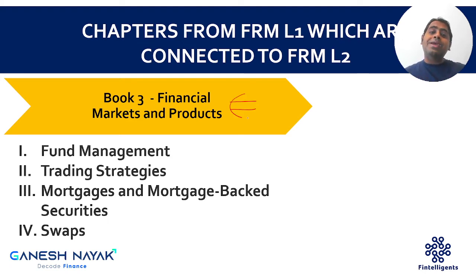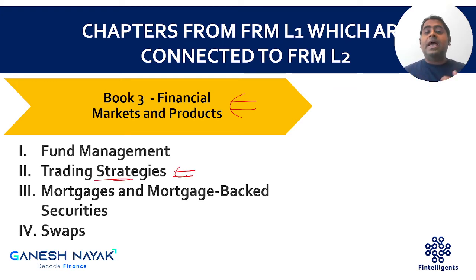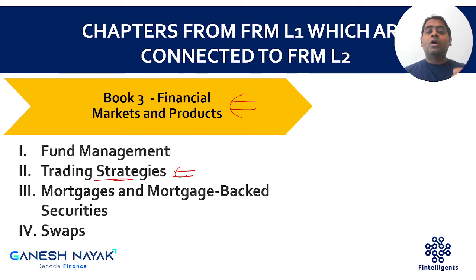Book 3 is Financial Markets and Products. In Level 2, they are not directly testing basics of products — they won't ask what an option is or what the payoff of an option is. It is expected that you already know options and futures in detail. That's why I've focused on Trading Strategies as a way to cross-check your entire understanding of options, since knowing this chapter means the previous chapters are also clear.